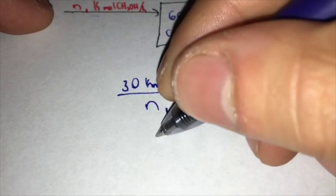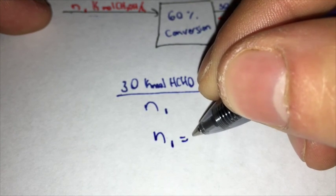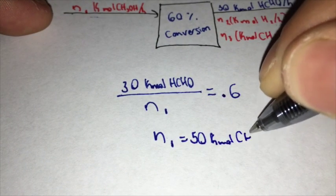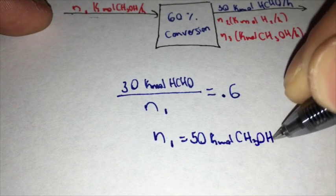we will find that N1 is equal to 50 kmol of CH3OH per hour.